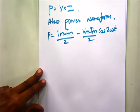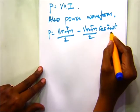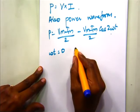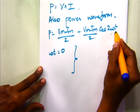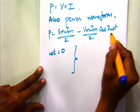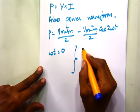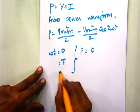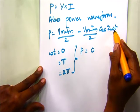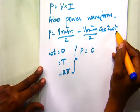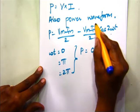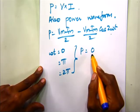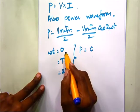If we want to plot the power waveform, the expression for power is Vm Im by 2 minus Vm Im by 2 cos of 2 omega t. Assuming different values of omega t: when omega t equals 0, this becomes cos 0 equals 1, giving Vm Im by 2 minus Vm Im by 2, so power equals 0. When omega t is pi or 2 pi, similarly cos 2pi and cos 4pi both equal 1, giving power equal to 0.